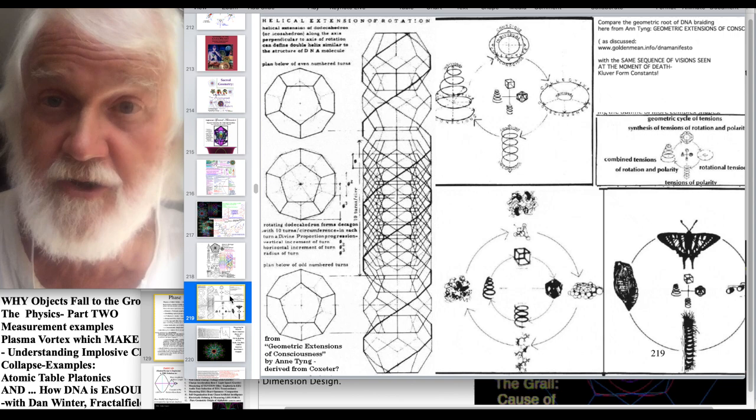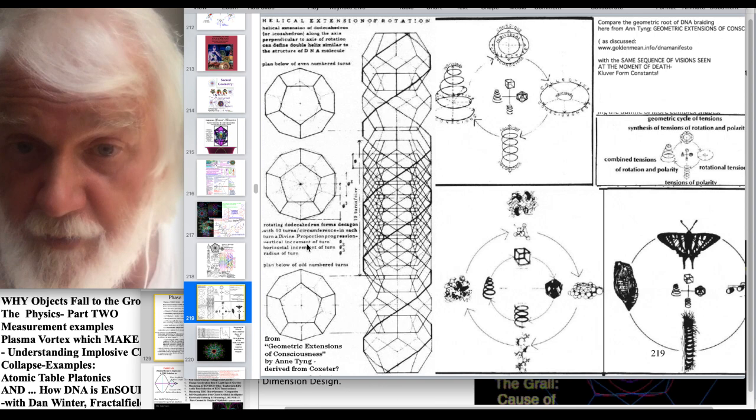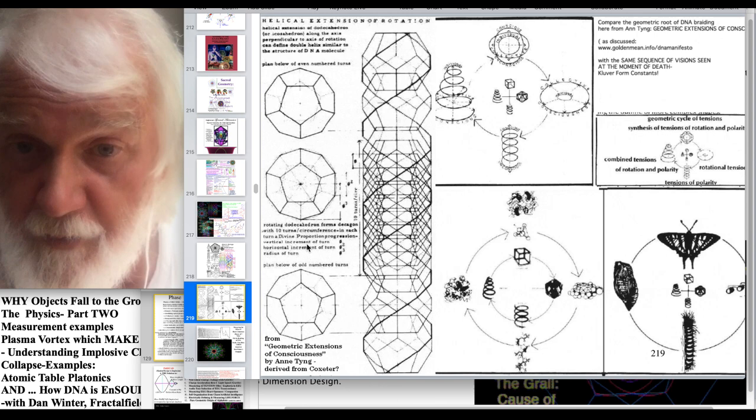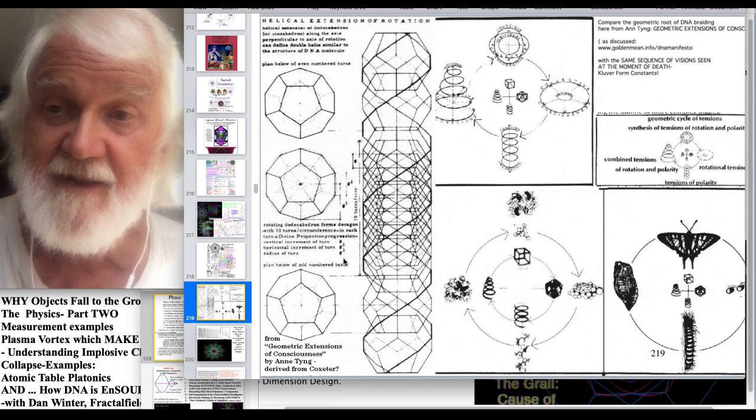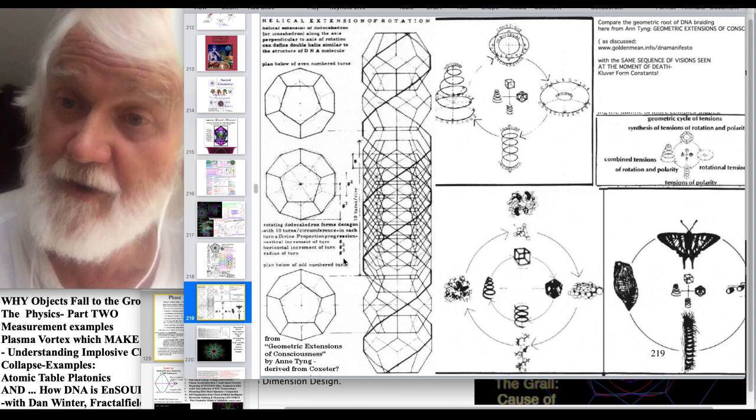But he's saying, here, note the vertical increment of turn, horizontal increment of turn, radius of turn, golden ratio, golden ratio squared, golden ratio cubed. This is golden ratio cascading, proving the physics, or strongly suggesting the physics of how DNA implodes, and thus becomes negantropic and a gravity maker.